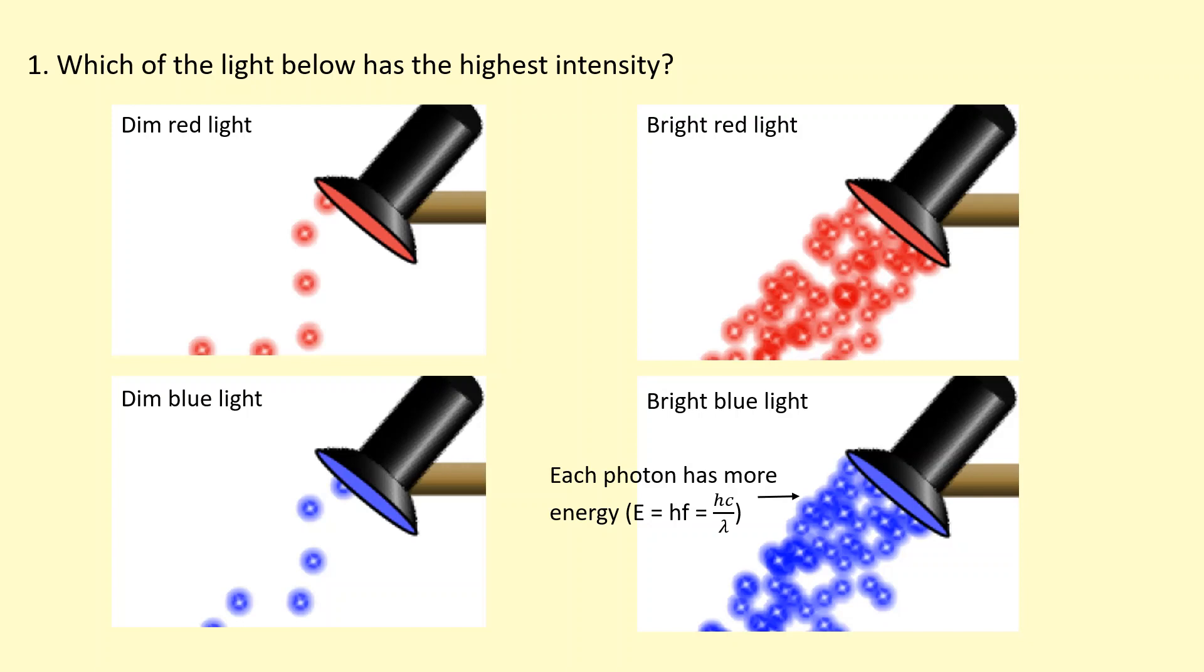Not only that because it's bright, bright means that there are more photons being emitted per unit time compared to the dim light. So therefore overall the amount of energy emitted per unit time is going to be the highest with the bright blue light.